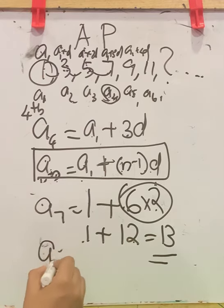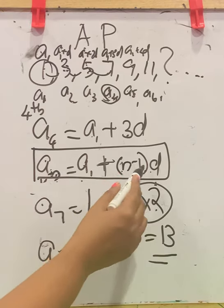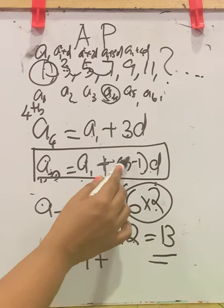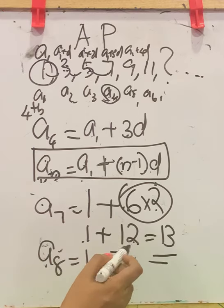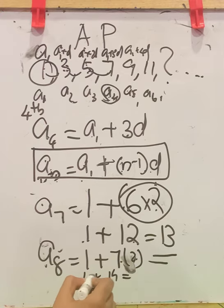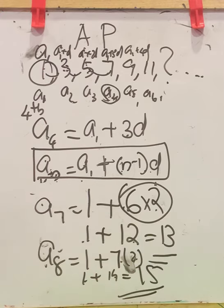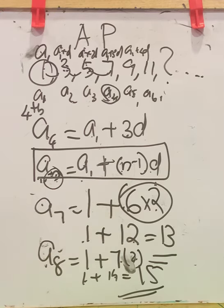If the 8th term is missing, A8 equals A1 plus (8 minus 1) times D, which is 1 plus 7 times 2. That gives 1 plus 14 equals 15. So this is how we find a missing term in an AP. The general form is AN equals A1 plus (N minus 1) times D, where N is the term position, A1 is the first term, and D is the common difference.